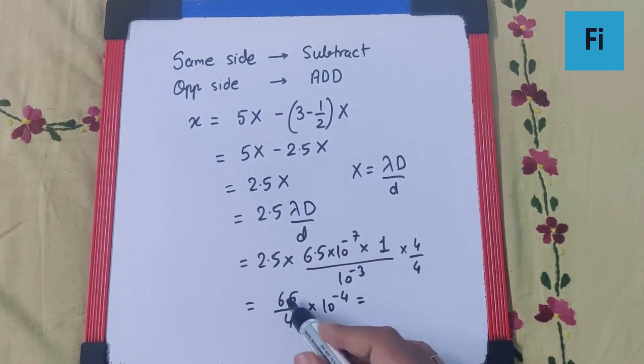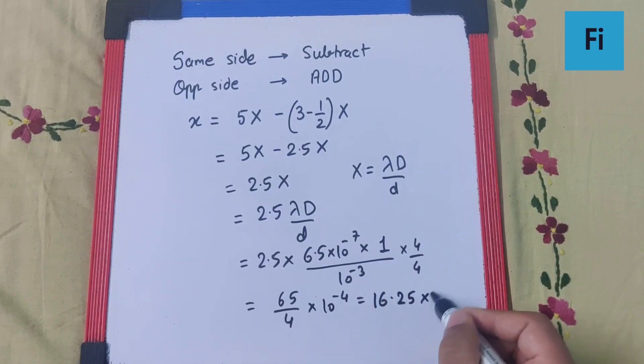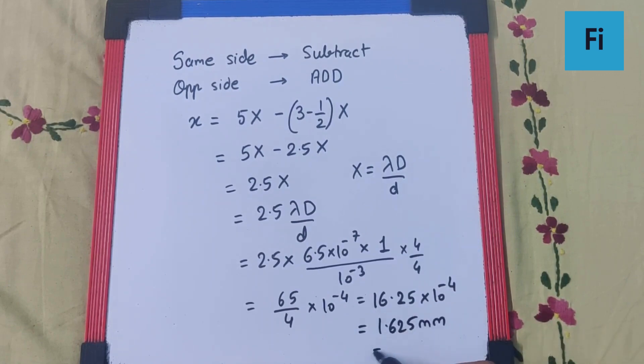4 into 1 is 4, 25 remaining. 4 into 6 is 24, 10 remaining. 4 into 2 is 8, and 4 into 5 is 20. This gives us a value of 1.625 mm, rounded off to 1.63 mm. And this is our final answer.